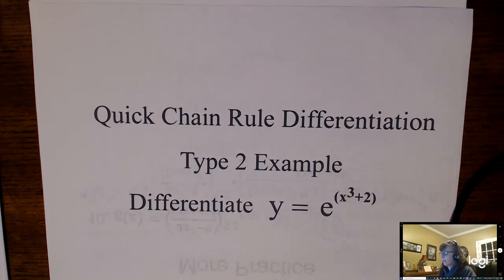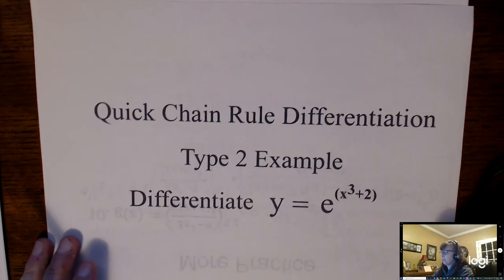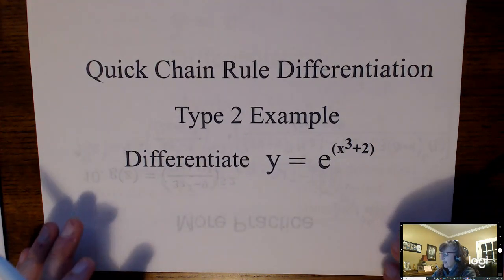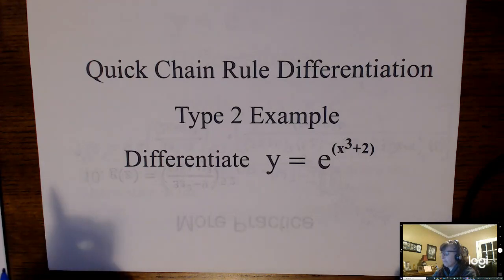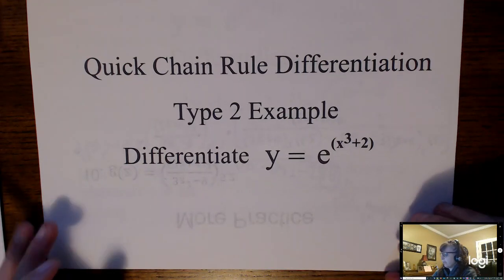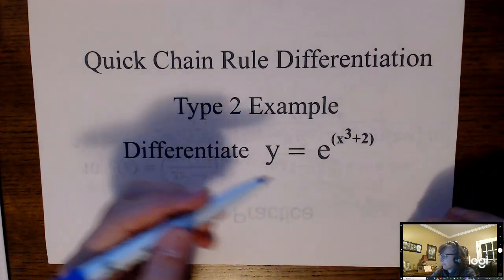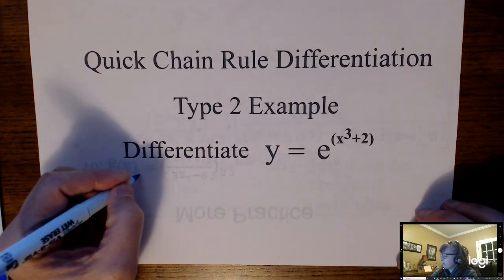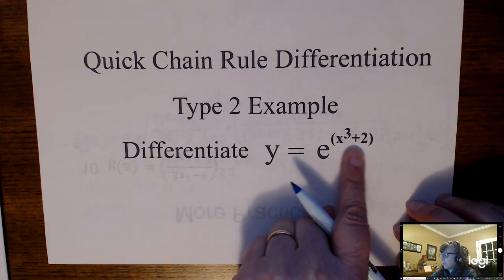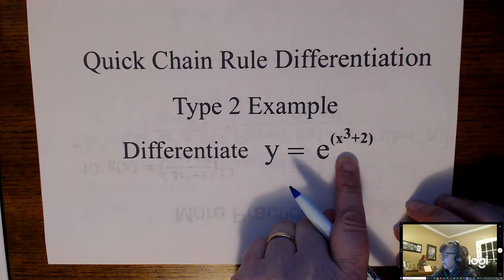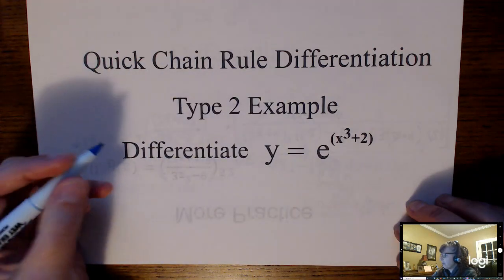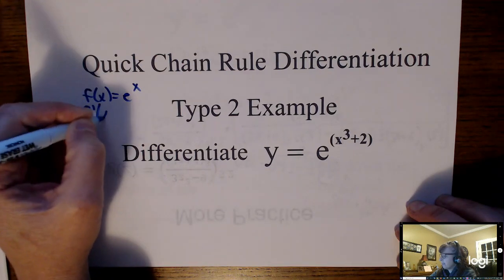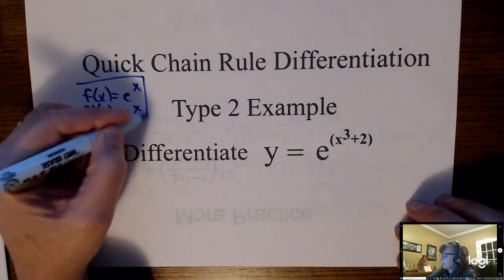The chain rule for e-functions and natural log functions is similar. You can think of it as the derivative of the outside times the derivative of the inside. If you have something more complicated than just x, you have to deal with it using the chain rule. We know that the derivative of e to the x is just e to the x — it's one of the easiest rules we have.